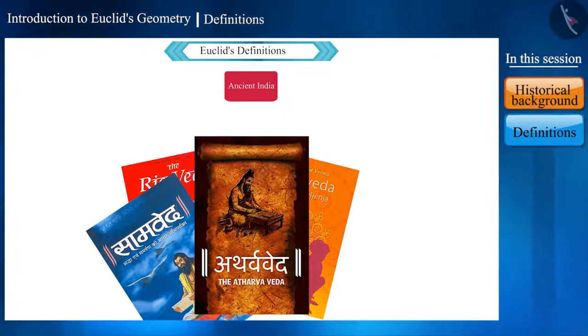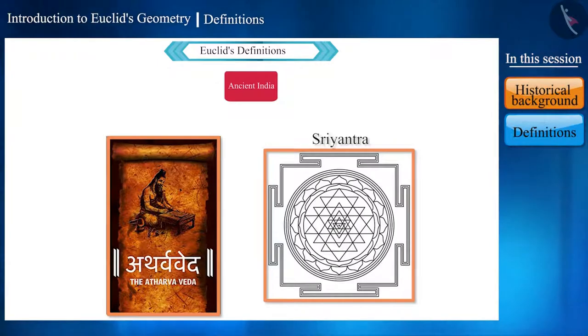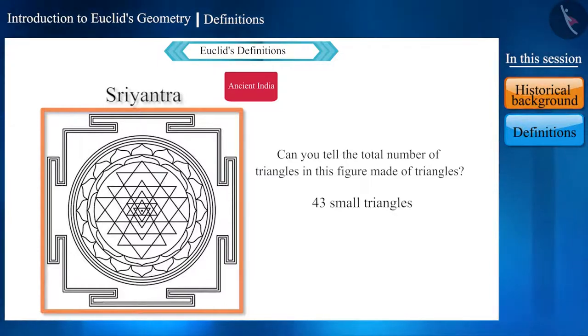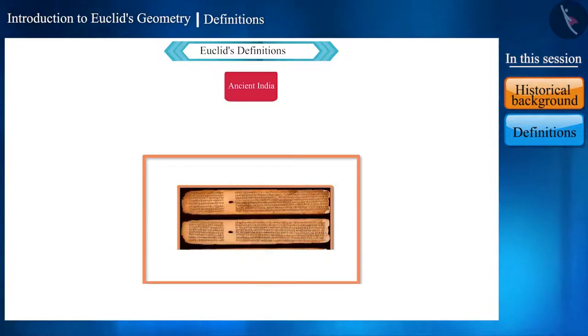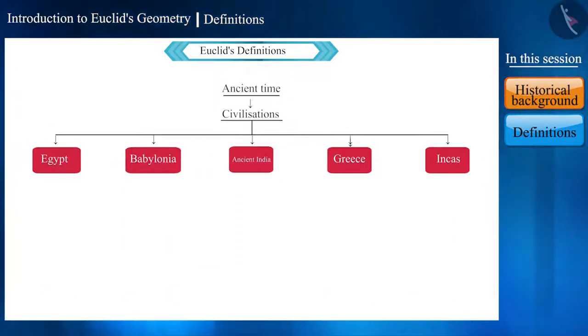Not just by seeing, but also by reading the Vedas and scriptures, we have found evidence of knowledge of geometry. In the Sri Yantra given in the Atharva Veda, nine isosceles triangles connected with each other are hidden. Can you tell the total number of triangles in this figure? These are arranged in such a way that 43 small triangles can be formed from them.